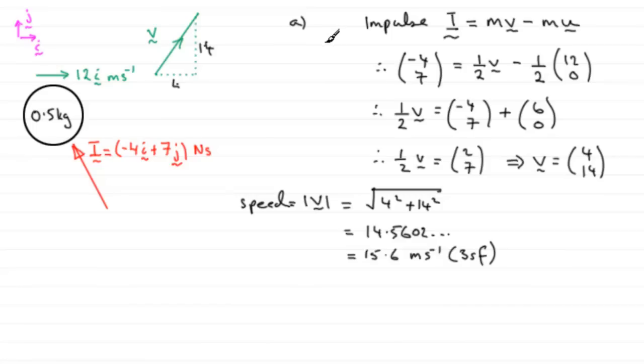The next part, B, we're asked to find the angle in degrees between the velocity of the ball immediately after the impact and the vector i. So in other words, well i is horizontal and this is the direction it's now going, so we're after this angle in here. We'll call it theta. For part B, bring it over here.